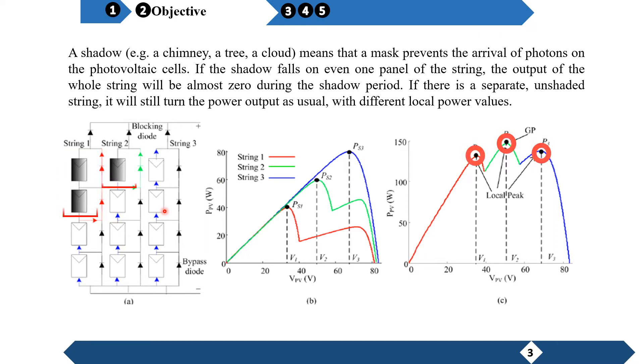If there is a separate enchanted tree, it will still turn the power output as usual, with a different local power values as you see it here.